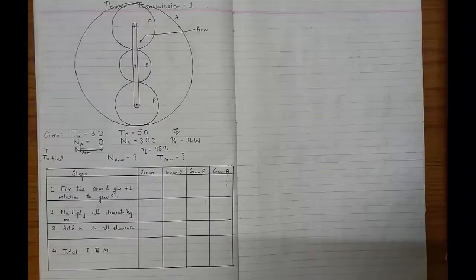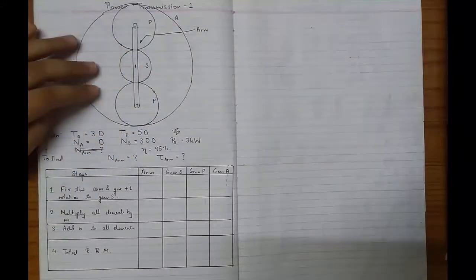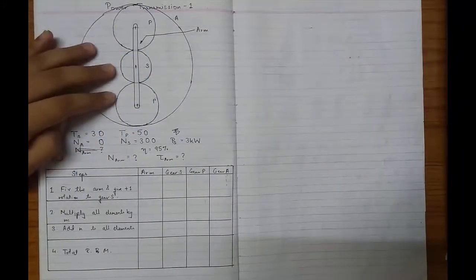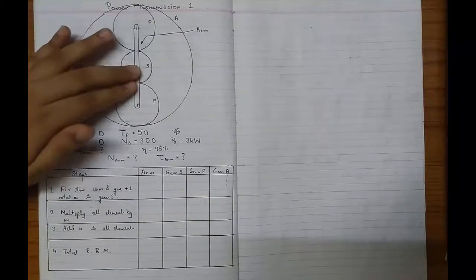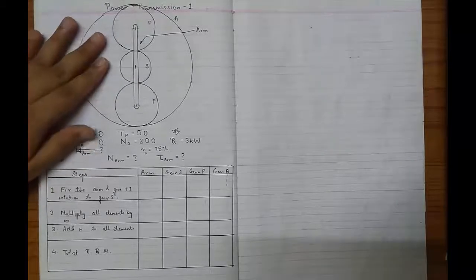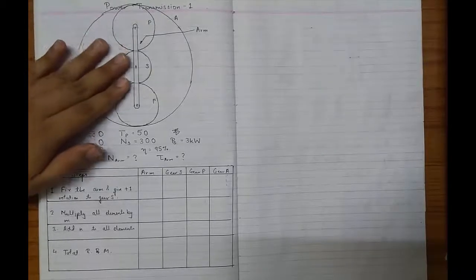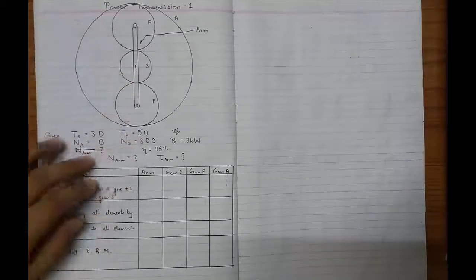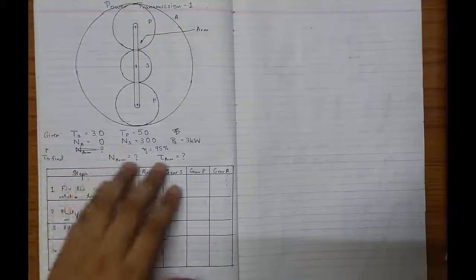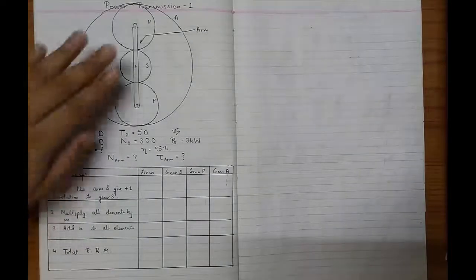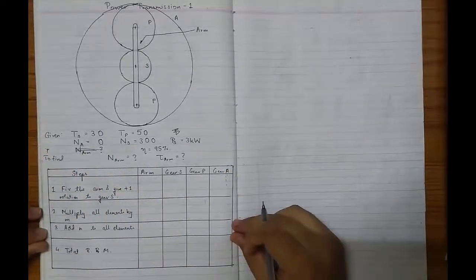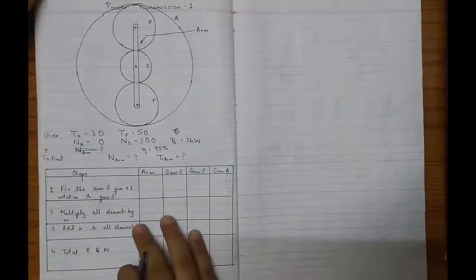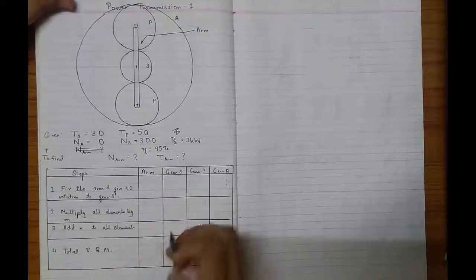These are the power transmission type of sums — this is also an epicyclic gear train. The only difference is they are also asking us to calculate how much power is transmitted from the driving shaft to the driven shaft. It is not very difficult. But before doing that, we have to find out the RPM of whatever things are asked. So first of all, because this is an epicyclic gear train, we will draw this table.